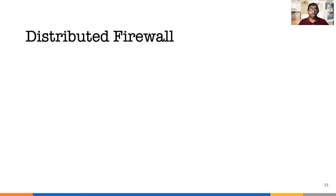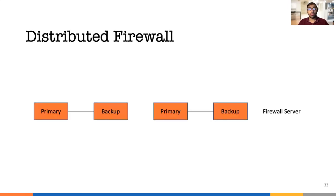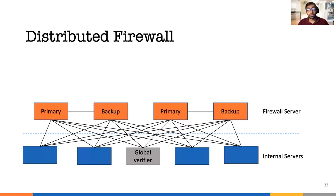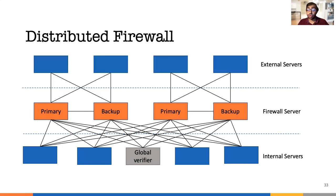Let's move on to the distributed firewall experiment. We have four firewalls with two primaries and two hot-standby backups. We have an internal network of five nodes — one node is dedicated to the global verifier and the rest are for traffic. We have four external nodes separated into two separate networks, and we base the traffic between external and internal nodes on traces provided in DC-TCP.